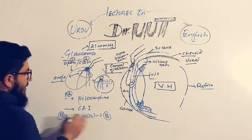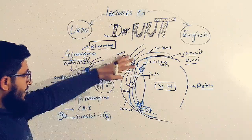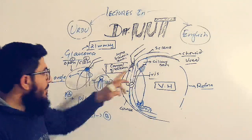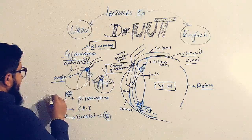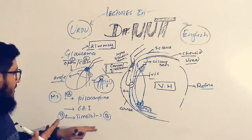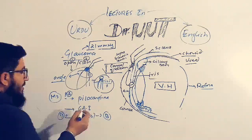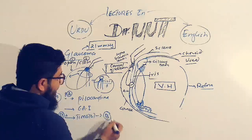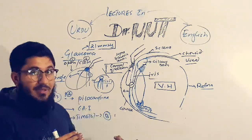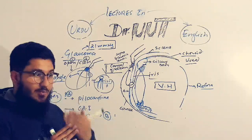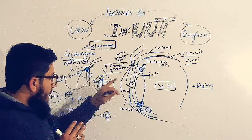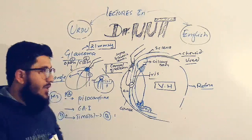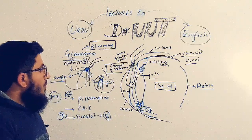Pilocarpine is a cholinergic agonist and parasympathomimetic, while timolol is a sympathetic antagonist. Pilocarpine stimulates M3 receptors on ciliary epithelial cells, increasing secretion. Timolol is a beta-antagonist — normally beta stimulation increases cyclic AMP. By blocking beta receptors with timolol, secretion of aqueous humor is stopped, thereby treating glaucoma.